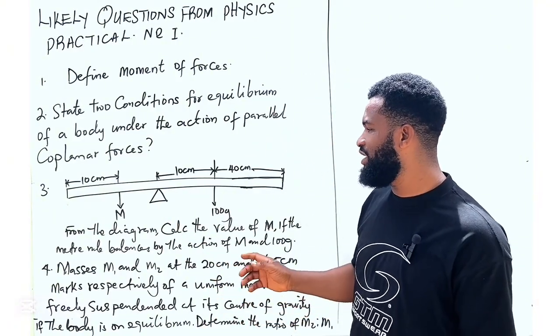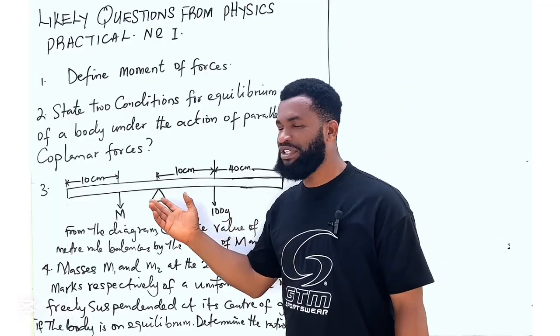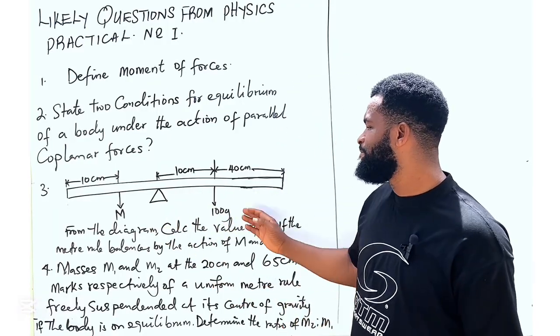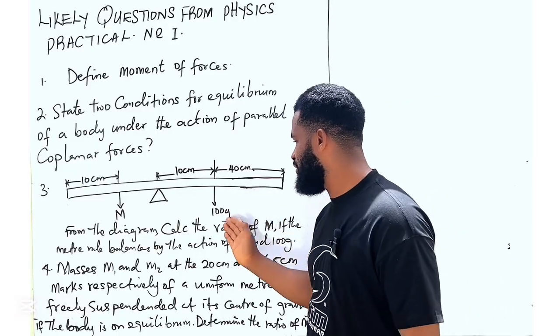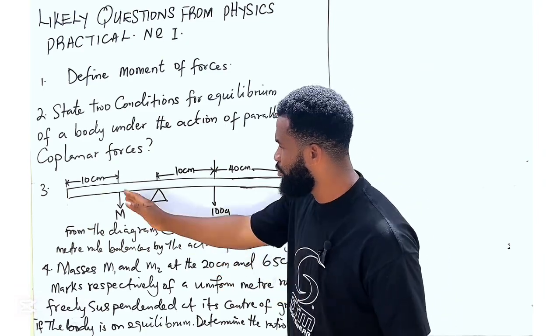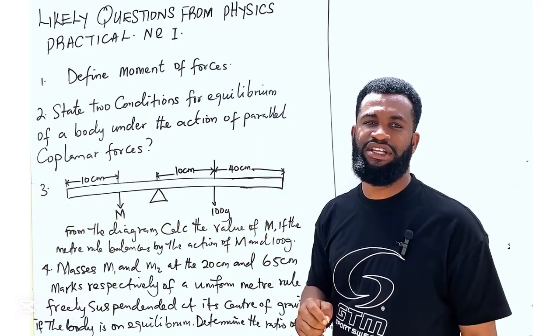So number one condition is that the sum of clockwise moments is equal to the sum of anticlockwise moments. That means this particular moment, the moment in this direction must be equal to the moment in this direction.